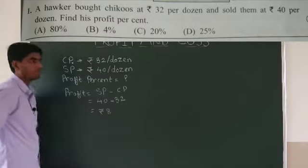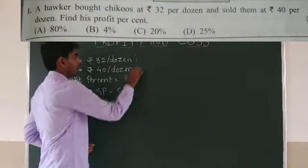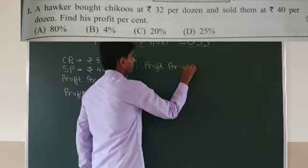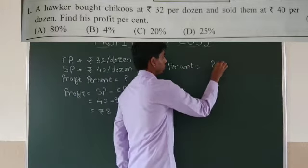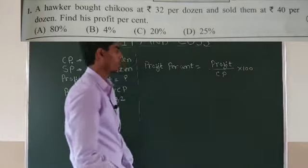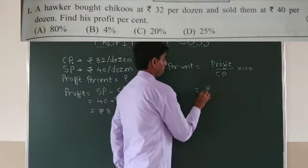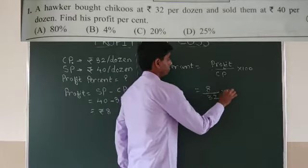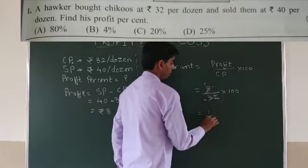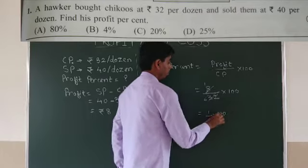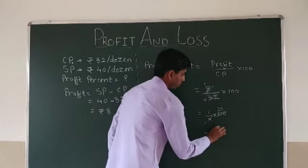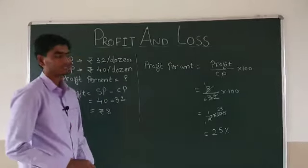So there is Rs 8 profit in this transaction. Now we can find profit percent. The formula is: profit percent equals profit over cost price into 100. Our profit is Rs 8 and cost price is Rs 32. So 8 over 32 into 100, which simplifies to 1 over 4 into 100, giving us 25. There is 25% profit in this transaction.